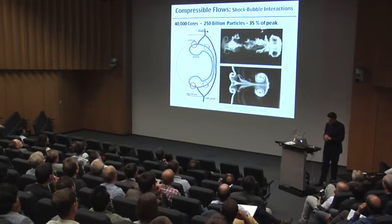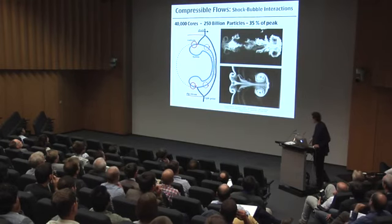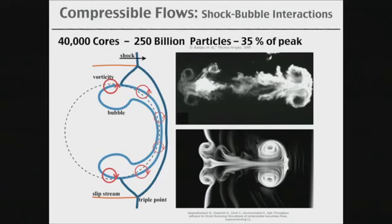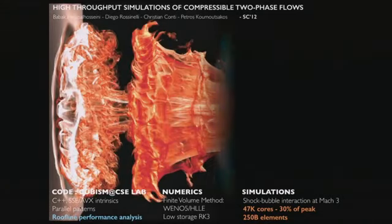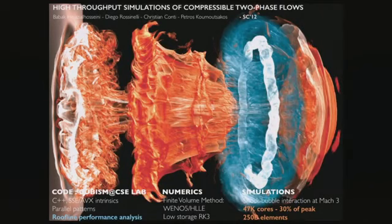We were interested in developing a code starting with compressible flows, so we didn't have to worry about the Poisson equation. We studied shock-bubble interaction, running at CSCS on 40,000 cores with 250 billion particles, achieving about 35% of peak — results presented at Supercomputing 2012. Diego is a computer scientist who learned fluid mechanics and PDEs; Babak was an experimental fluid mechanician who learned computer science; Panos stayed a computer scientist. Thanks to this team we performed these simulations, already at 30% of peak while building toward something bigger.